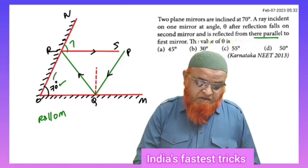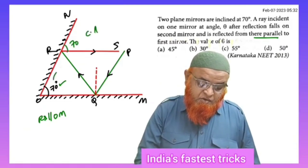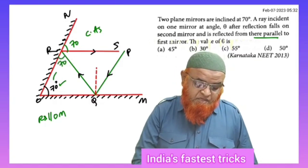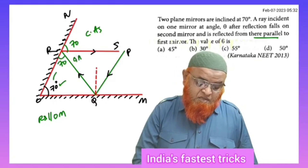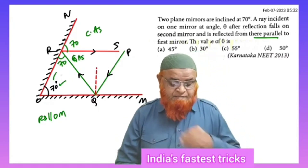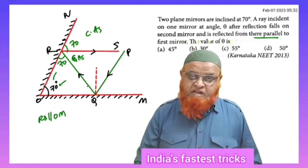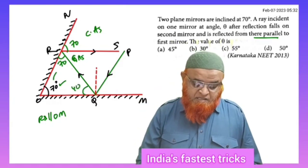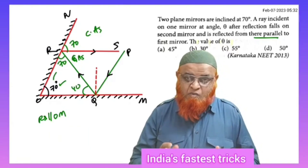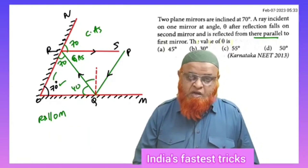Therefore, since the angle is 70°, this is also going to be 70° — these are called corresponding angles. This side glancing angle and this side glancing angle are both 70°. So 70 + 70 = 140°, which means this angle is going to be 40°, because the sum of angles in a triangle is 180°.